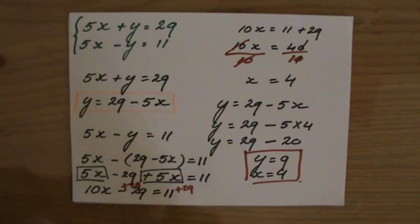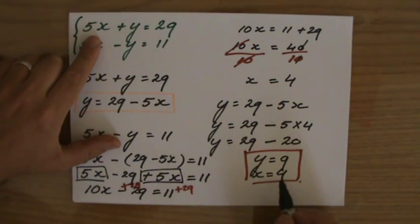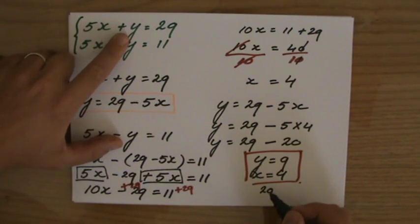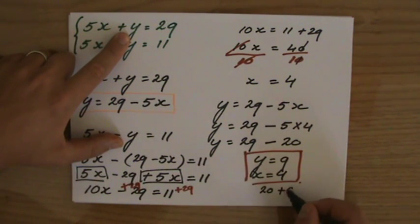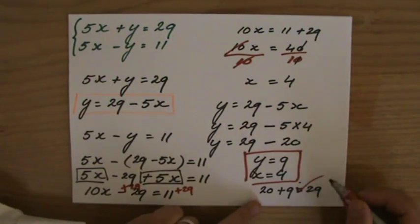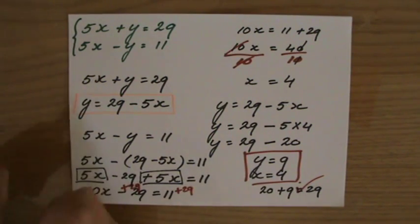So look, they say 5x, so 5 times 4, which is 20, plus y, so plus 9, and that should equal 29. 20 plus 9, indeed, is 29. So that first equation, I can put a big tick there for myself.